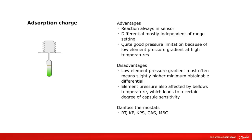The advantages of the absorption charge are that the reaction is always in the sensor, the differential is mostly independent of range setting, and there is quite good pressure limitation because of the low element pressure gradient at high temperatures. The disadvantages are that a low element pressure gradient most often means a slightly higher minimum obtainable differential, and that the element pressure is also affected by bellows temperature, which leads to a certain degree of capsule sensitivity.